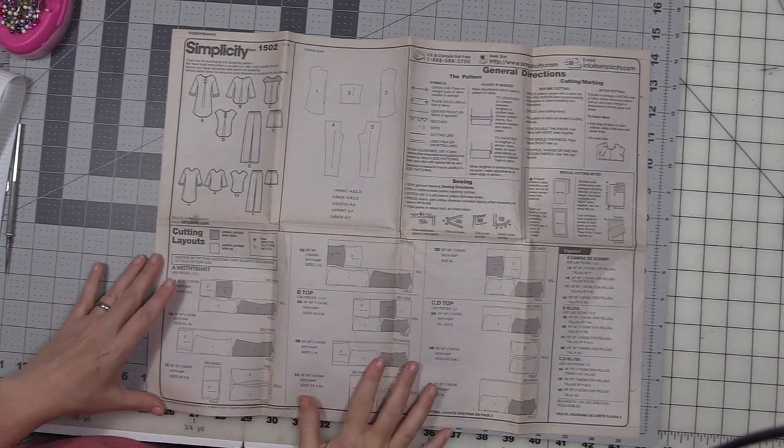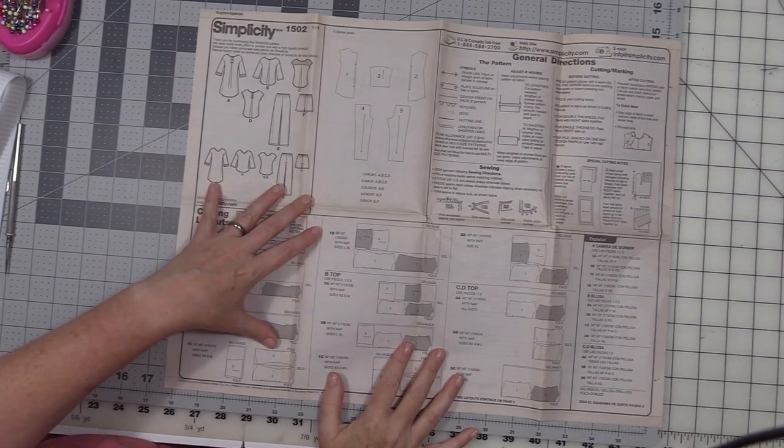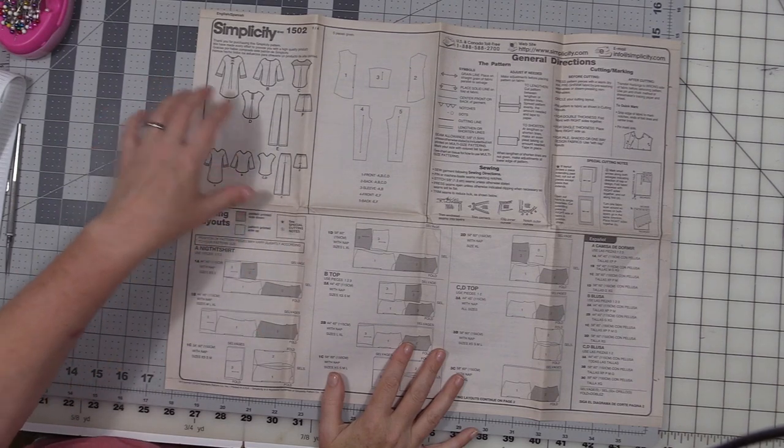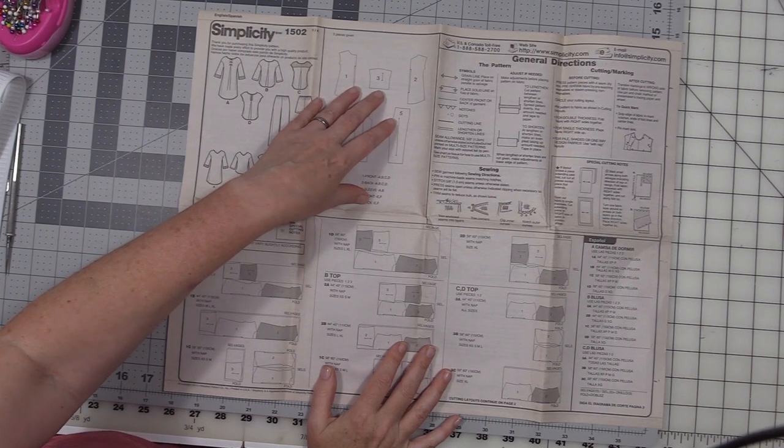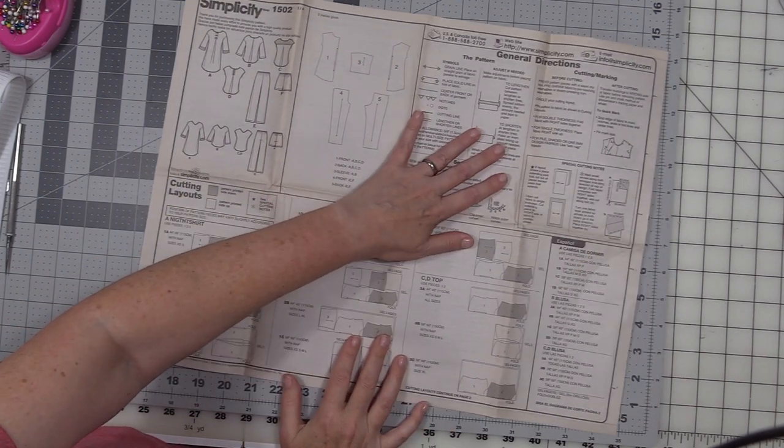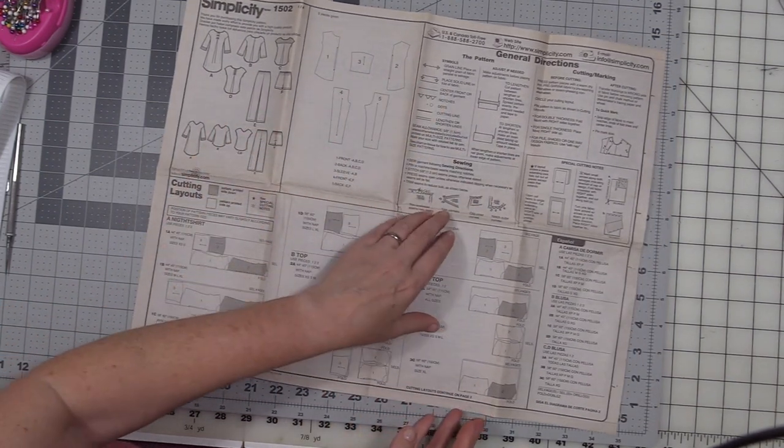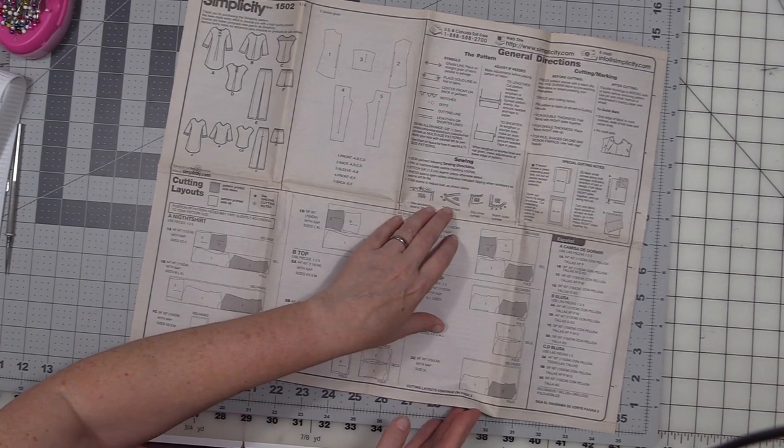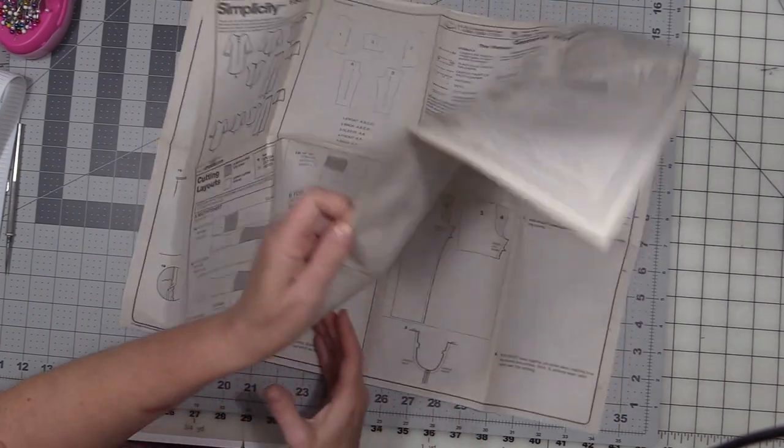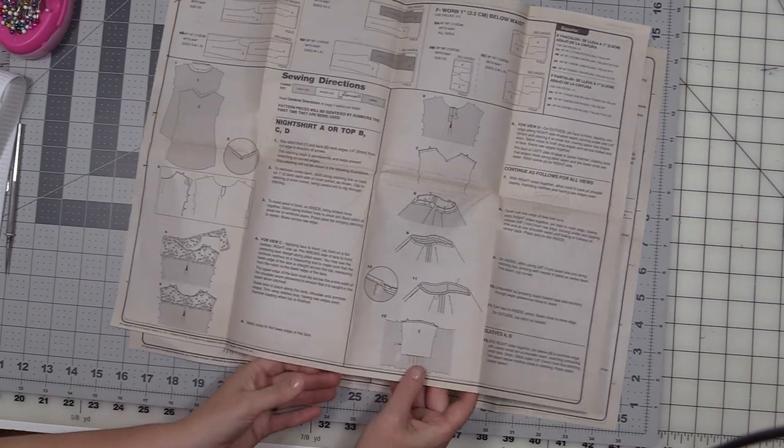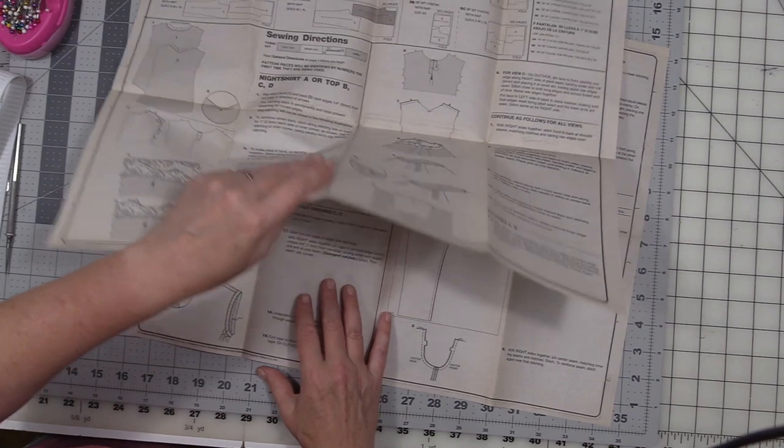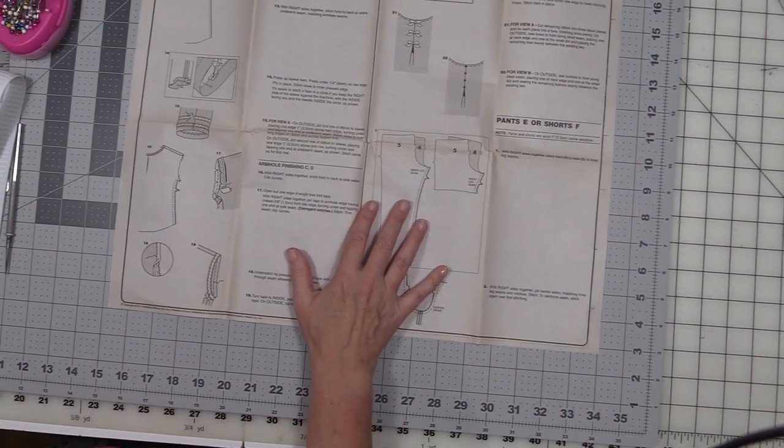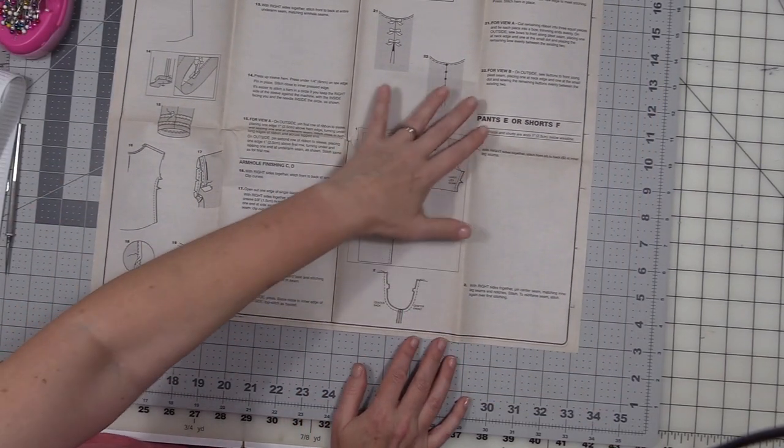So what you need to do is go ahead, read through your instructions completely. So everything that I just covered, I want you to look at the views, look at the pattern pieces they have, look at any general directions they give you, look at any sewing terms that they give you, and then find where the shorts instructions begin. So here you also want to look at your layout for this, the instructions start on page three, read through all the instructions.